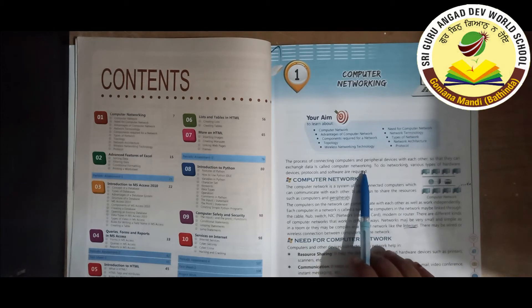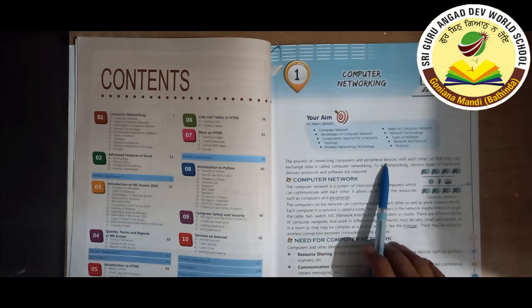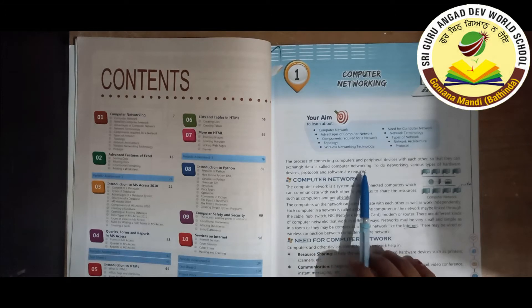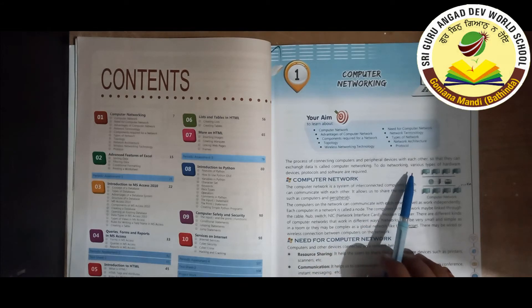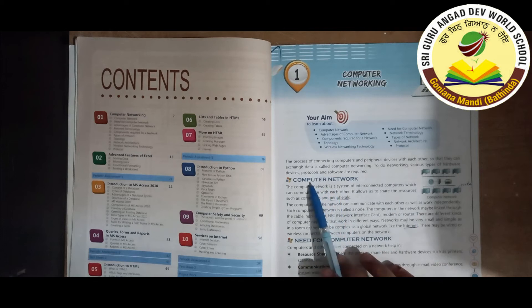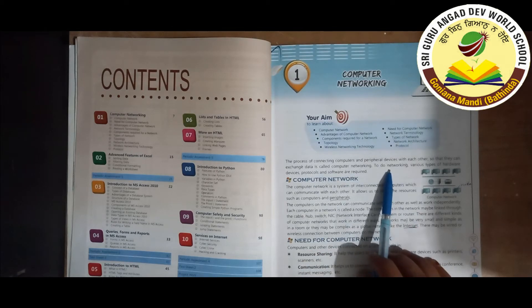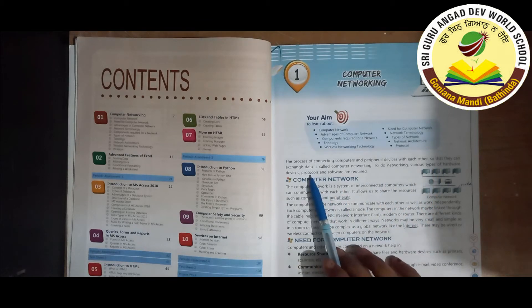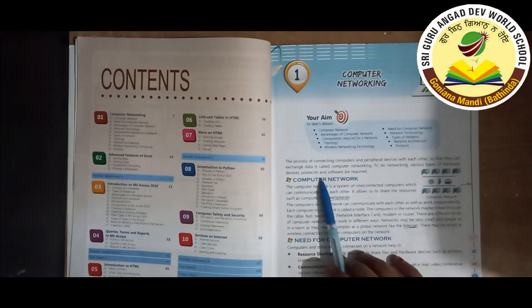When computers connect to their peripheral devices, it is called computer networking so that they can exchange data. When computers or peripheral devices exchange data, that is networking. To do networking, various types of hardware devices, protocols, and software are required.